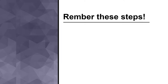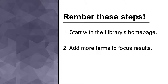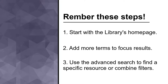So, remember these basic steps. 1. Try doing a basic search right from the library's homepage to start. 2. Try adding more specific terms to your search to help narrow down your results. 3. When you know you want a specific resource, use the advanced search to search within categories like title, author, or subject, and to combine multiple search filters.